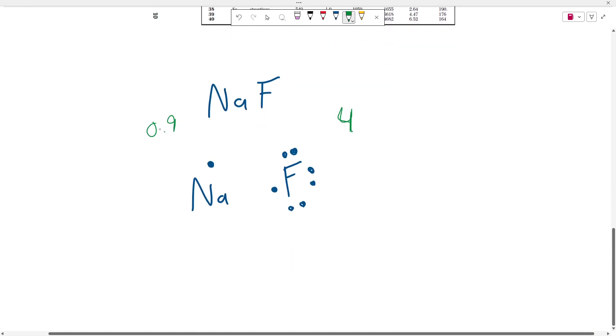So the difference in electronegativities is going to be 3.1. Whenever your electronegativity is greater than 1.7, you're going to be left with an ionic bond.